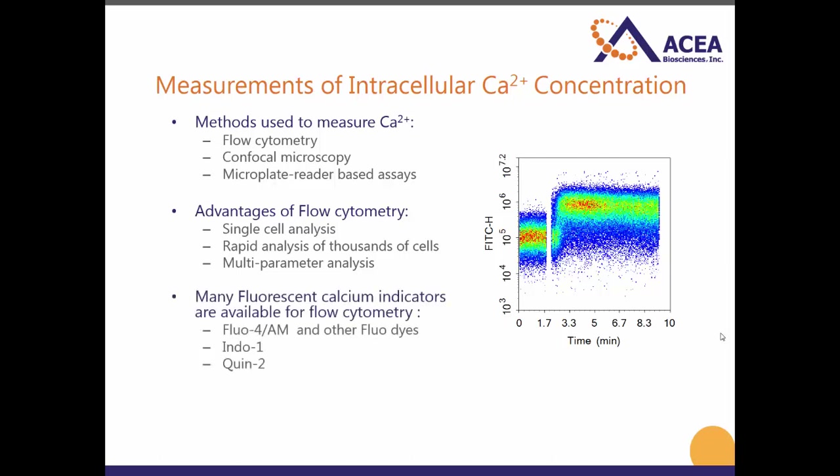The reagents that are used to measure calcium flux by flow cytometry are several commercially available fluorescent calcium indicators, dyes which increase in the presence and binding of calcium such as the ones indicated below. In the following experiment we will be using Fluo-4 AM to measure calcium in Jurkat T cells.